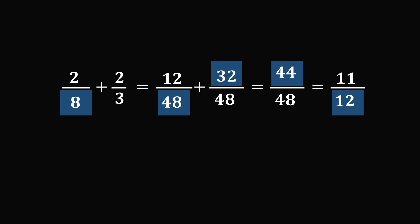2 divided by 8 plus 2 divided by 3 is equal to 12 divided by 48 plus 32 divided by 48, which equals 44 over 48, which equals 11 over 12. And that's the answer.